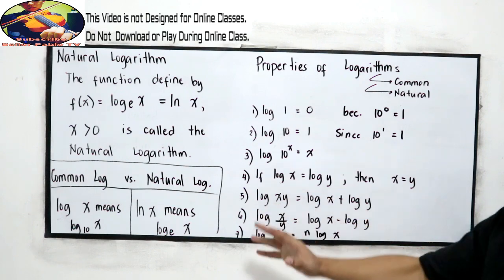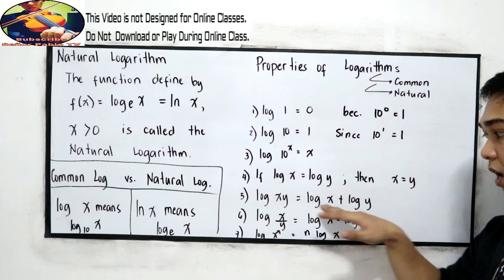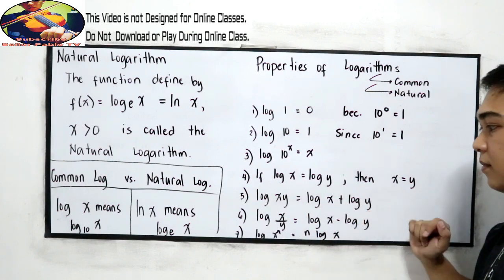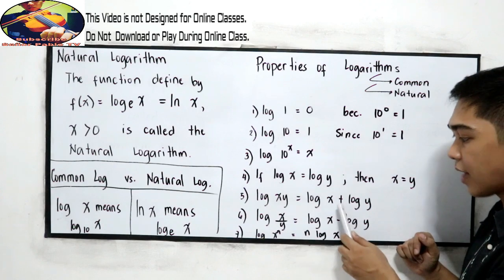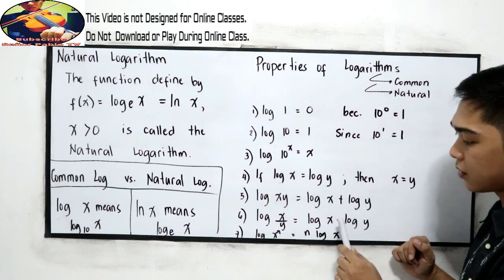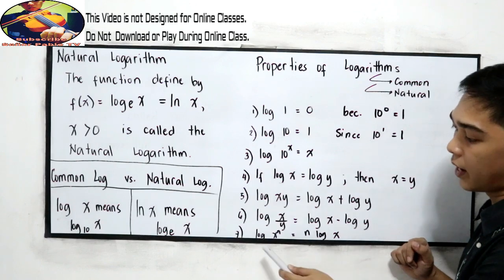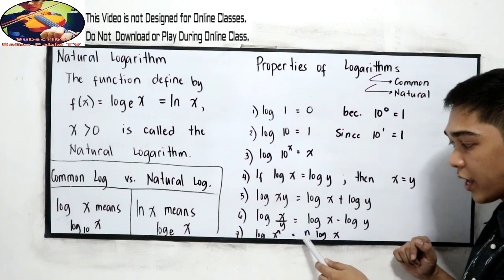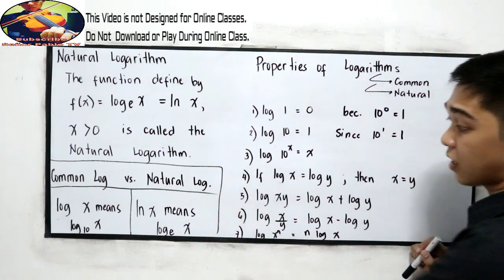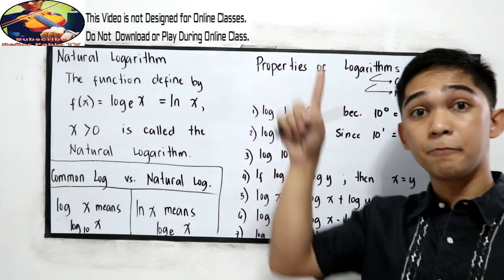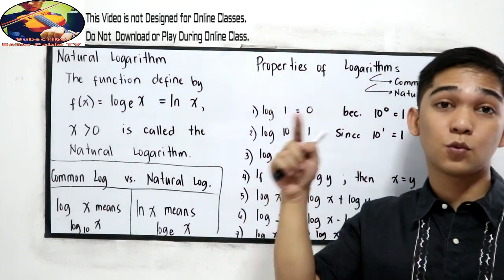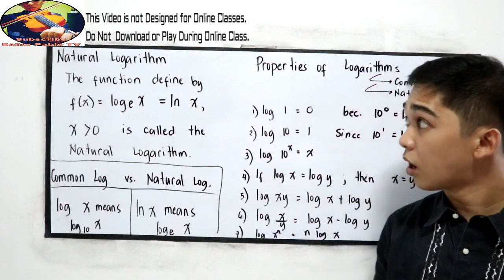Properties 5, 6, and 7 are the laws of logarithm. Log of x times y equals log x plus log y — multiplication becomes addition. Log of x over y equals log x minus log y. And log of x raised to n equals n times log x. If you want to understand properties 5, 6, and 7, just click the card and it will direct you to the laws of logarithm.